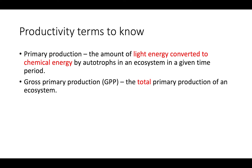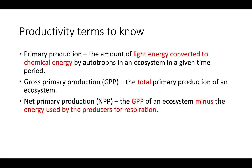Net primary production, on the other hand, is the gross primary production of an ecosystem minus the energy that those organisms use in respiration. You take the gross primary production and subtract the energy used during respiration, and that gives you your net primary production.